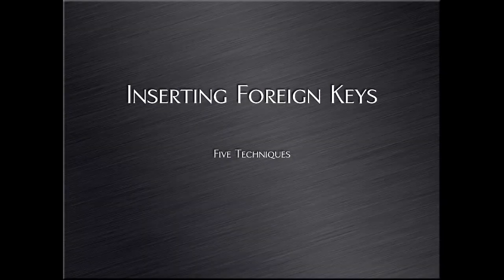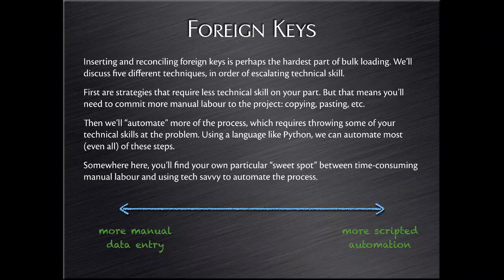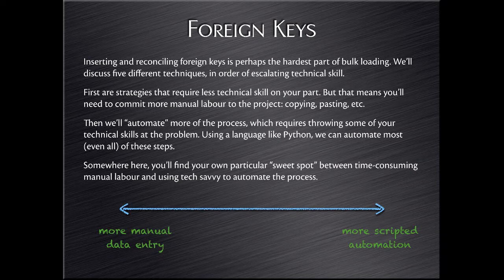By far the most nitpicky part about doing a bulk load is getting those foreign keys all squared away. There's no one right way to do this, and in fact there's not even an easiest way. I think about it as a continuum from easy to hard, and you'll find your sweet spot. I'm going to start on the left, which is more manual data entry, copying and pasting, looking things up, typing things in. Then we'll work toward the right where we'll write some Python code so it can do all of this foreign key reconciliation for us.